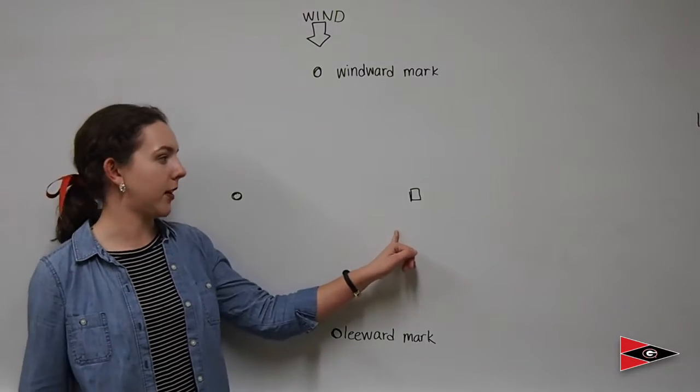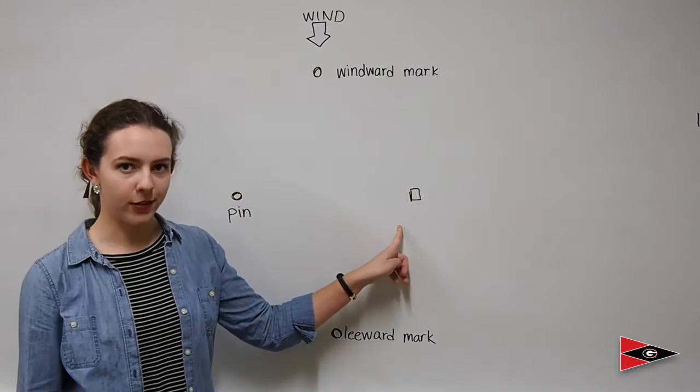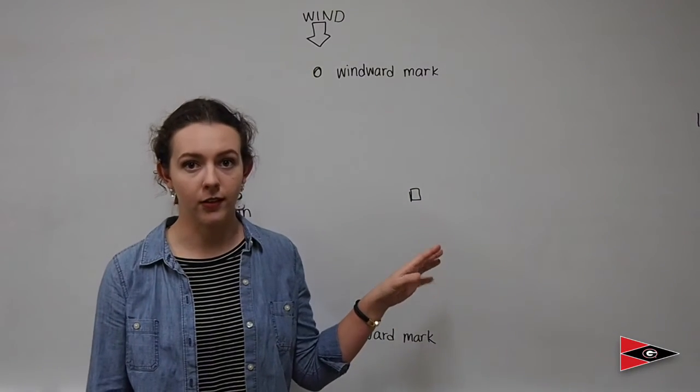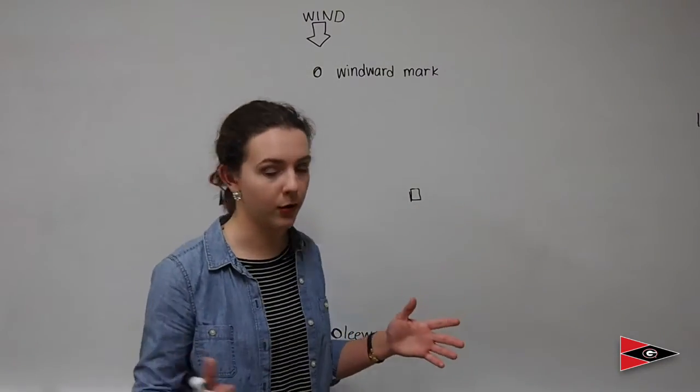Your side and side buoys right here are a little different. This one is going to be called a pin, and this one is actually a boat, usually a motorboat. The size of the motorboat depends on the size of the sailboats competing. So this boat right here is called the race committee boat, or the RC boat.